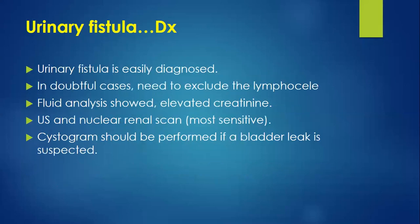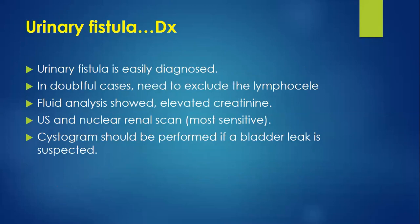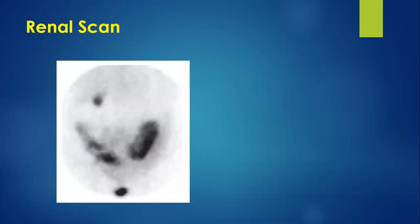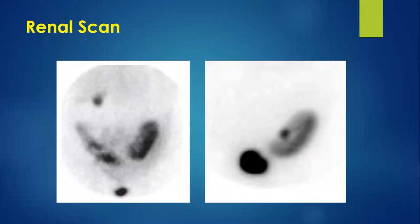Diagnosis of urinary fistula is straightforward — fluid analysis shows elevated creatinine, and ultrasound and renogram are the treatment choice. Nuclear renal scan is more sensitive for urinary fistula; cystogram should be performed if bladder leak is suspected. On the renogram, the right side shows a good outline of the kidney, and on the left side in the pelvic area there is free fluid indicating urinary leak. After correction, a repeat scan shows a nicely outlined transplant kidney with no leak.